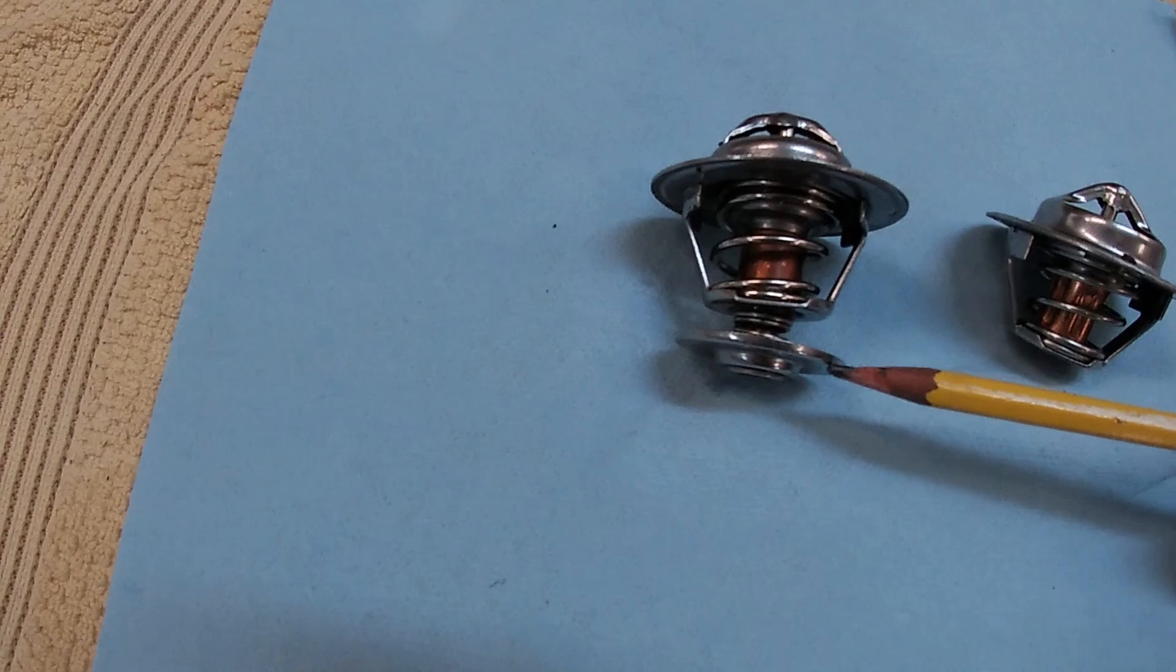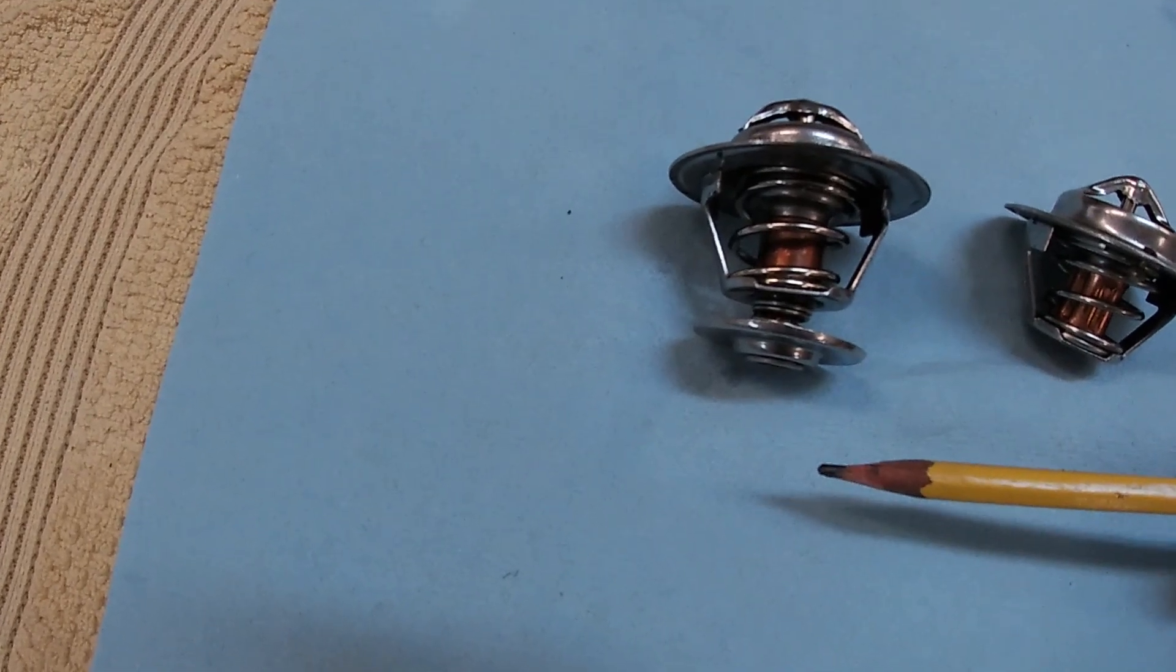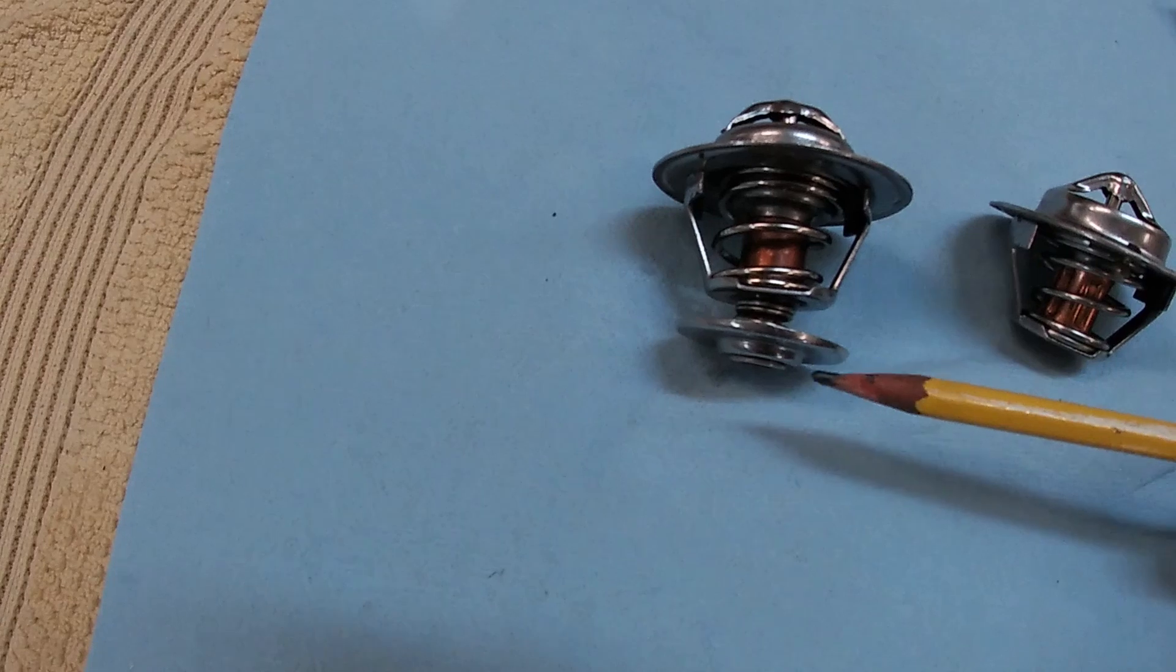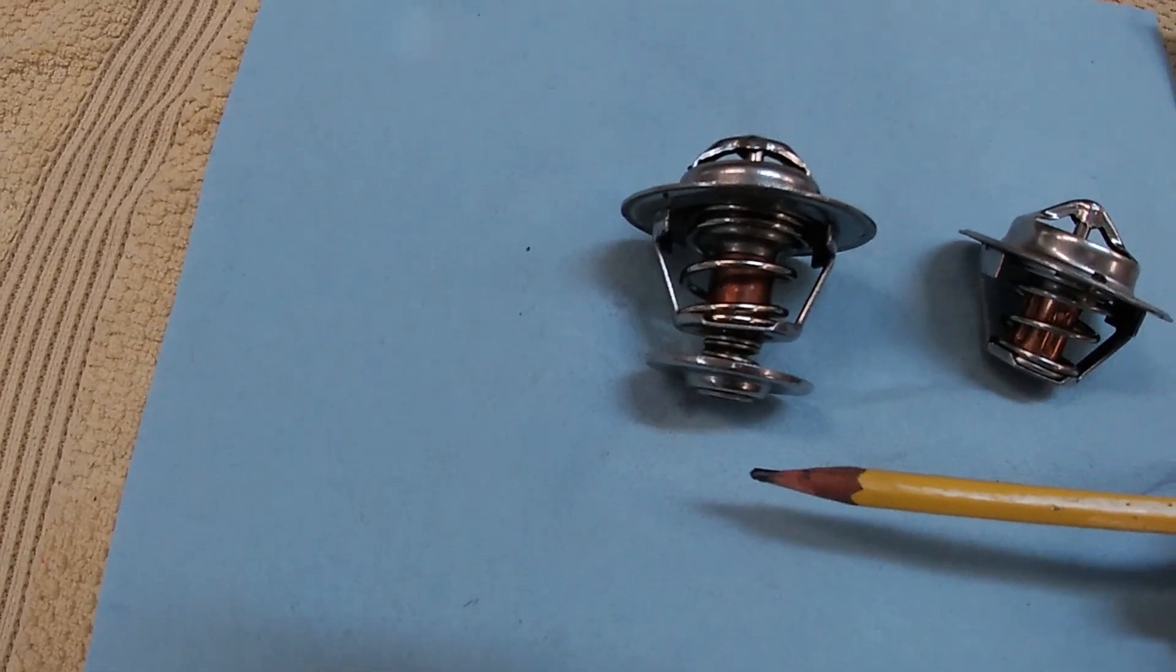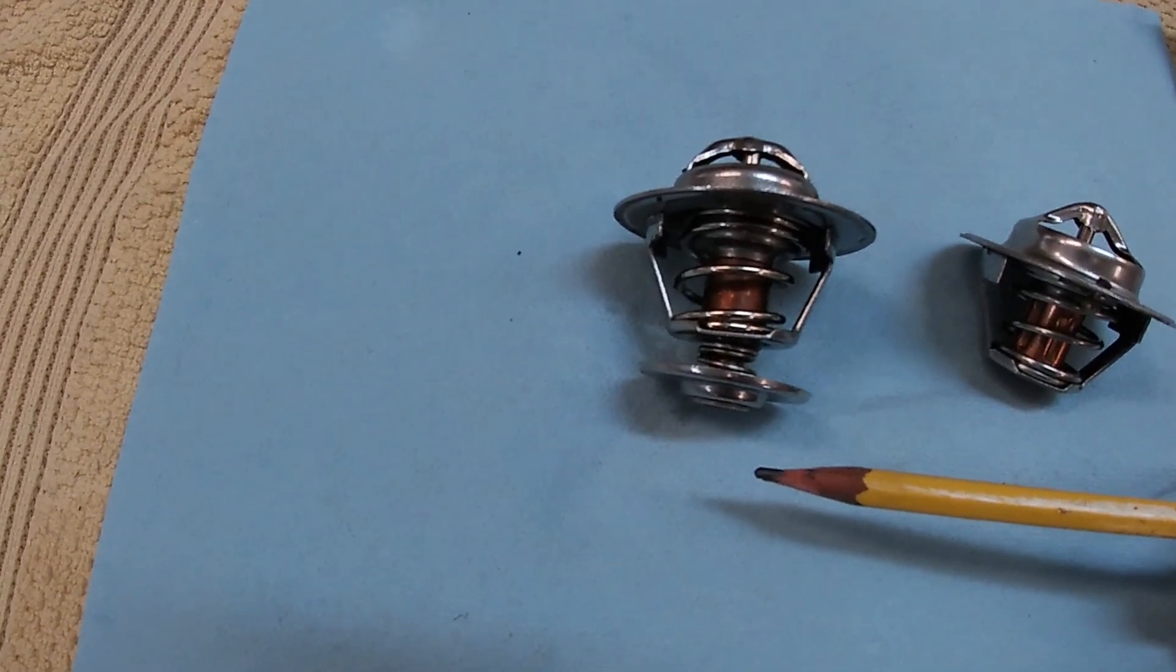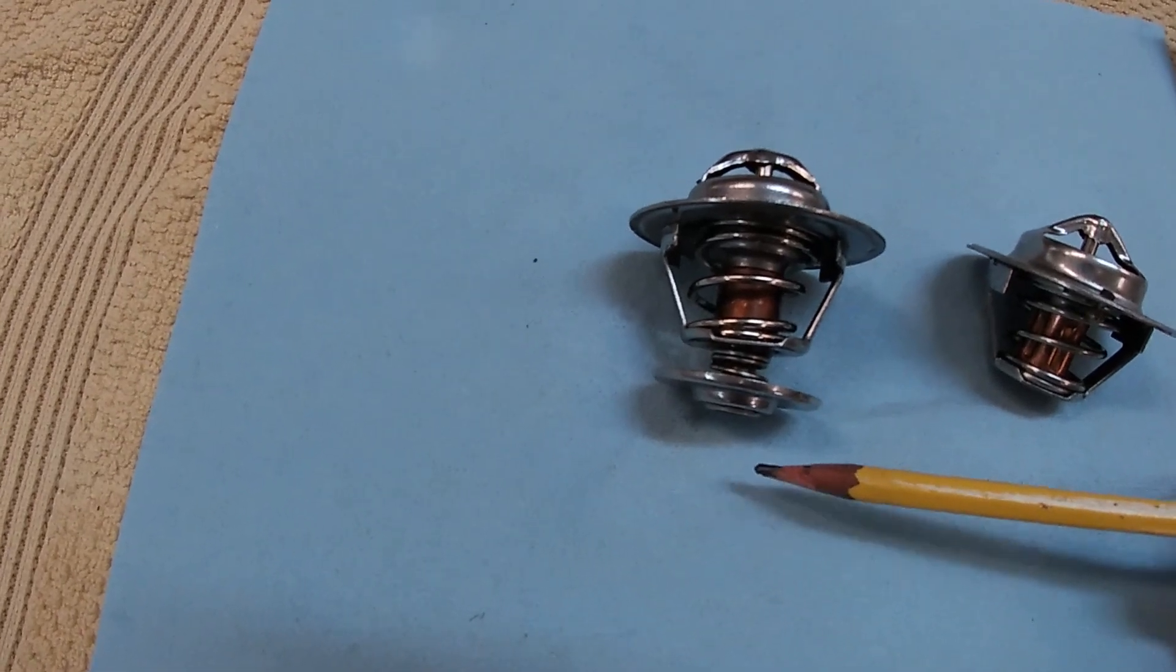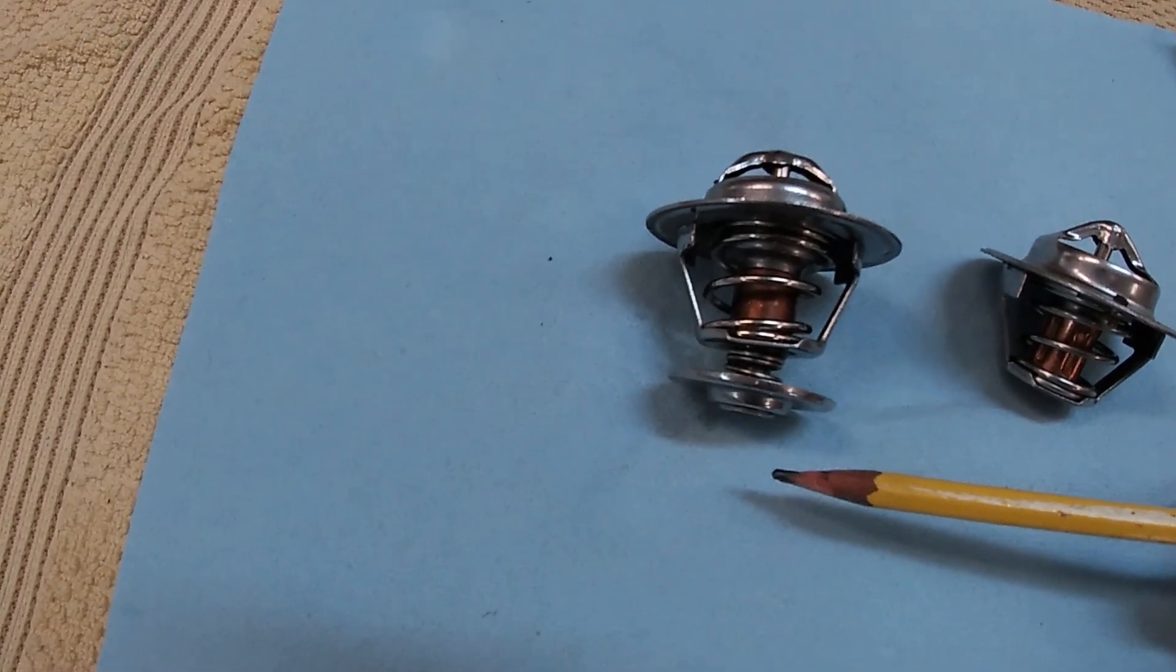When the thermostat is open, this section moves down as the valve opens. It's all one piece. This section moves down and that actually cuts off the bypass back to the water pump.